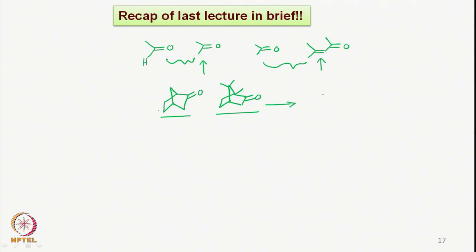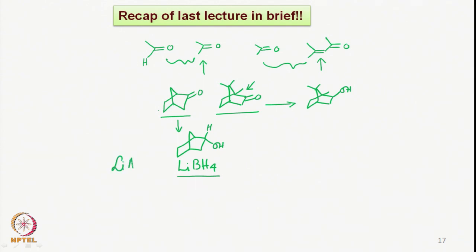In this case, for example, the reduction gives the alcohol which is on the top part of this particular molecule, which is sterically hindered. Whereas in the other case, we got the corresponding endo alcohol because the top part is relatively free and therefore we get the reduction from the exo side. Then towards the end, we used lithium borohydride as a reducing agent and tried to see how it is comparable with sodium borohydride and lithium aluminum hydride. We found out that lithium aluminum hydride is a stronger reducing agent compared to lithium borohydride, which is stronger than sodium borohydride.